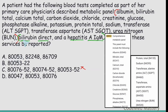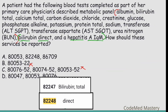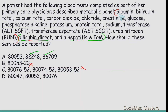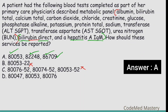We have to code those two extra tests separately along with the panel code, per the guideline that additional tests should be reported separately. So we code 80053 plus bilirubin direct and hepatitis A IgM separately. Option B only mentions 80053 alone, but we have two extra tests remaining, so eliminate option B. In option A, code 82248 is for bilirubin direct and 86709 is for hepatitis A antibody IgM — both correct. So option A is the right answer.